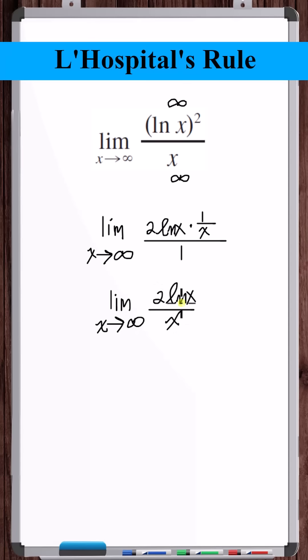Plugging in infinity, natural log of x goes to infinity. 2 times infinity is infinity. x goes to infinity. So again, we have an indeterminate form of the type infinity over infinity.